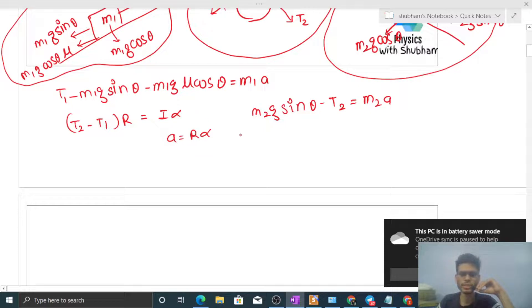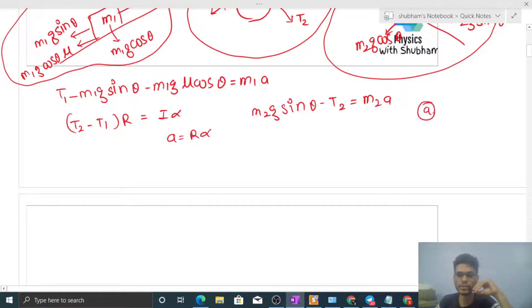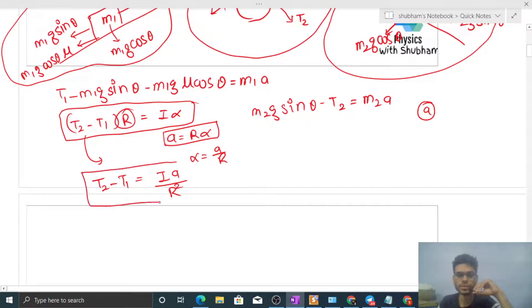You see, there are four equations and four variables. What do we need? The value of acceleration. So first let's eliminate alpha. Alpha will be simply A upon R. Where is alpha? Alpha is in this equation. Replace alpha by A by R. So T2 minus T1 will be simply I into A by R, and one more R goes down, so R square.